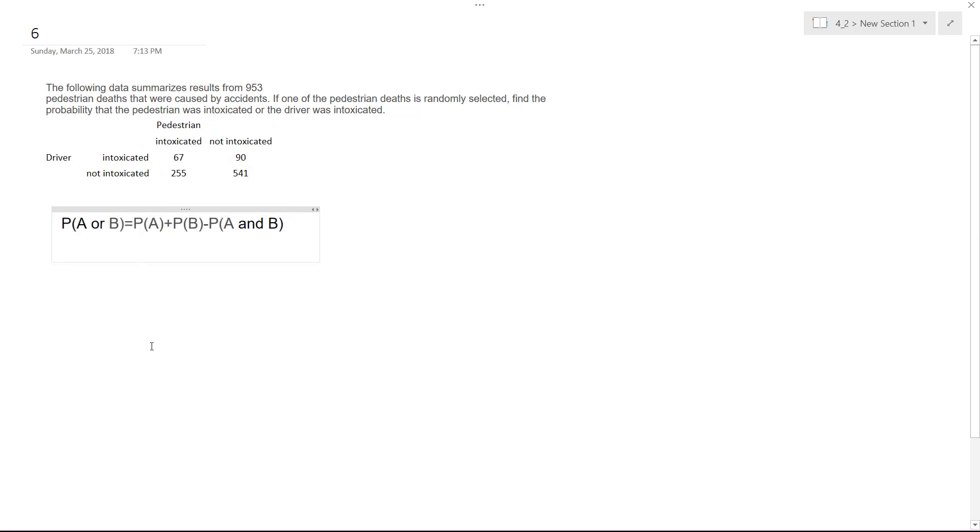So we'll make probability A equal to the pedestrians. So what that's going to be is, we'll take total pedestrian intoxication. So you got to be careful how you read this. So we're looking up from pedestrians here, it's just this row here. So it's going to be 67 plus 255 all over everything. So this ends up being 953. So what we get for P of A is 322 over 953.